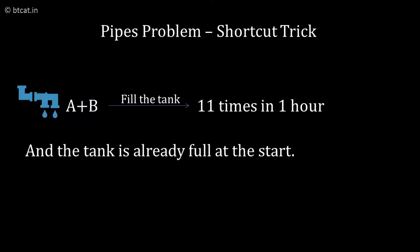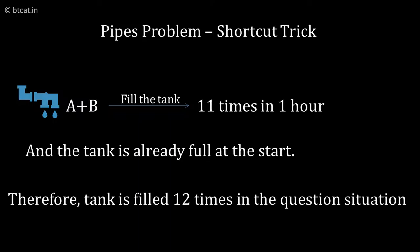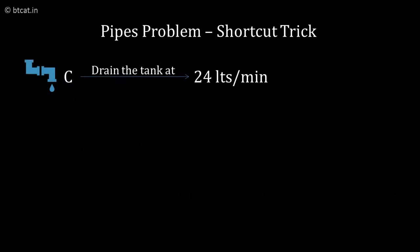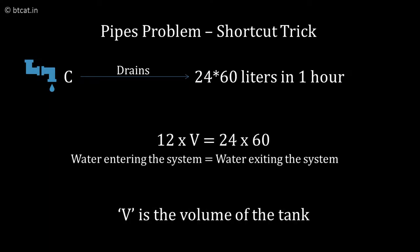Therefore, in total, 12 times the tank will be filled in one hour. Now look at pipe C. Pipe C is taking out 24 liters per minute. So in exactly one hour, how many liters of water will go out? It will be 24 times 60.